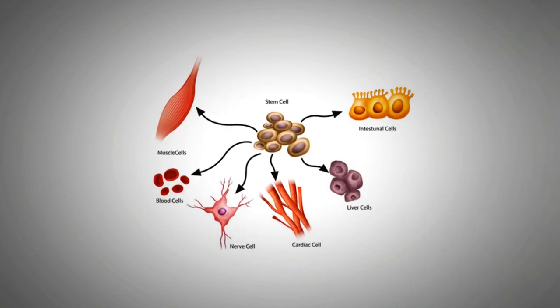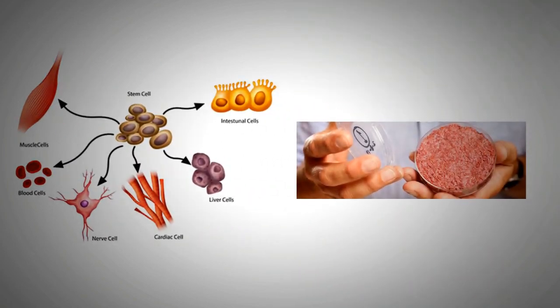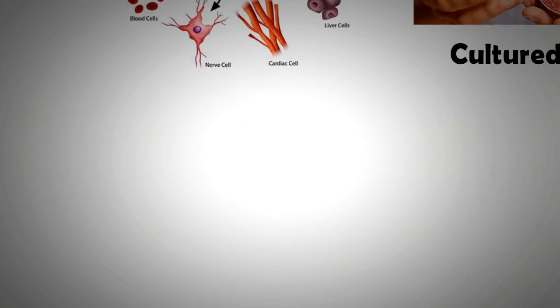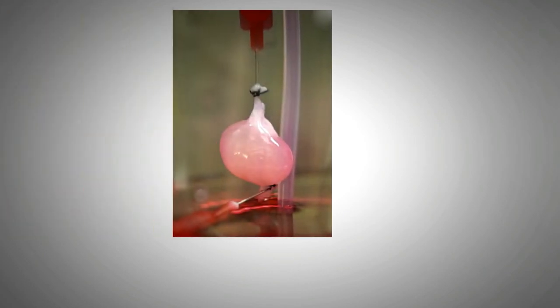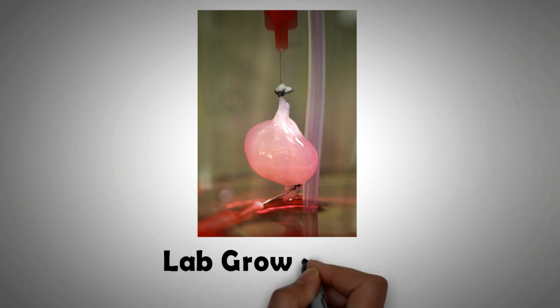We are now living in an era where stem cell research has allowed us to grow muscles in the labs. Cultured meat is being sold commercially. Genetic engineering has progressed leaps and bounds to a level where we are now looking to regrow body organs that may need a replacement.